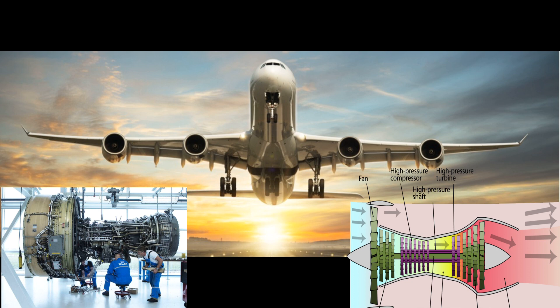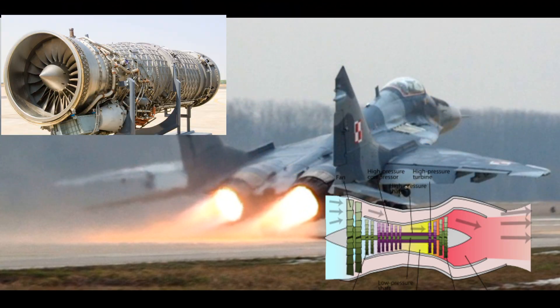These engines have been used in civil aviation, enabling the development of turbofan engines known as high-bypass engines. In military aviation, supersonic speeds have been achieved with a fan and afterburner system added to the engines, and the types known as low-bypass ratio engines have emerged.